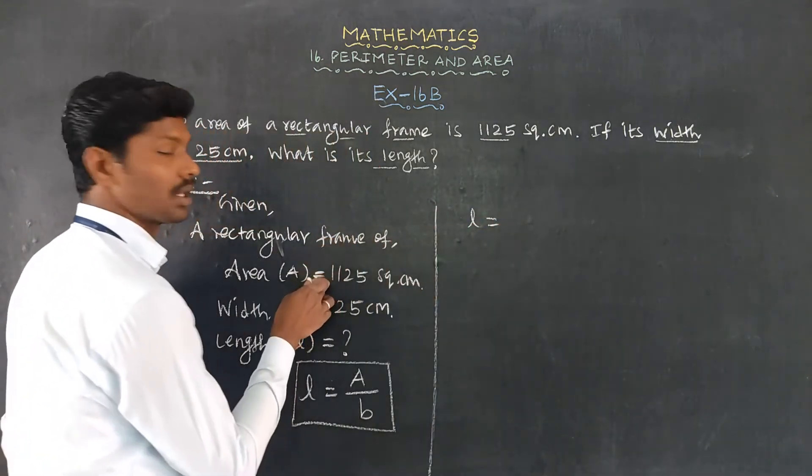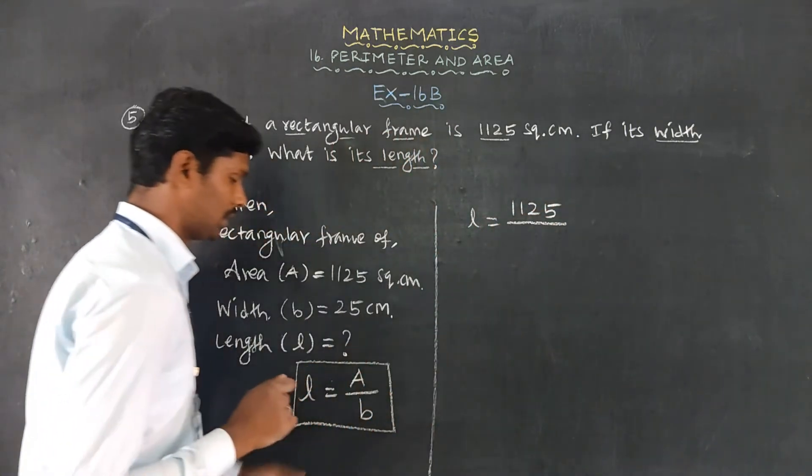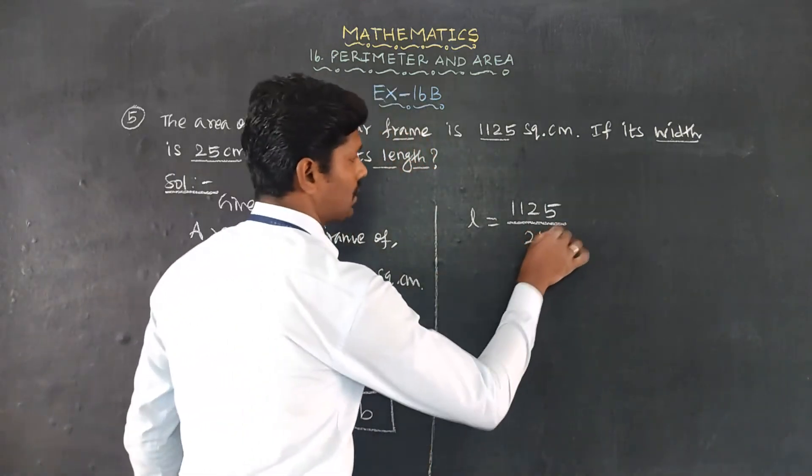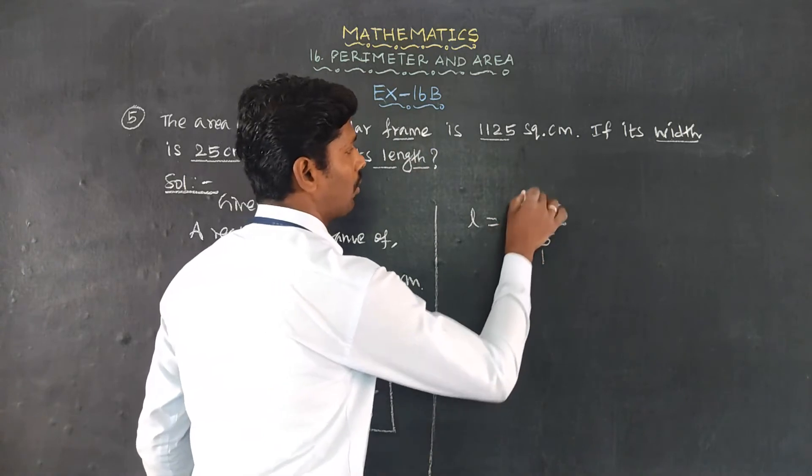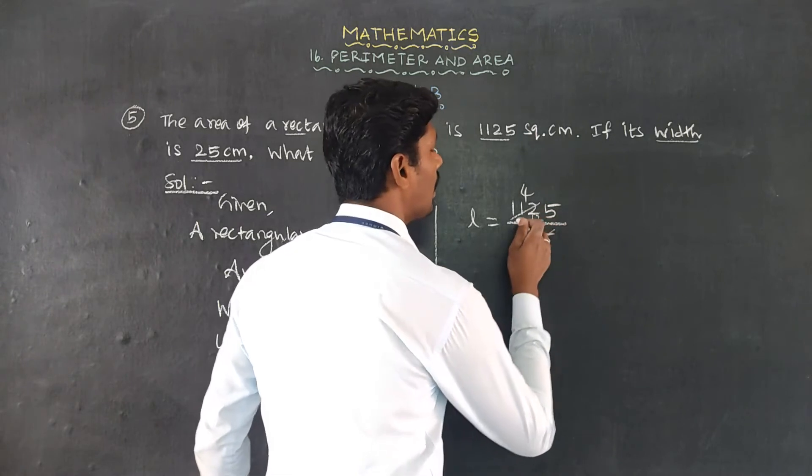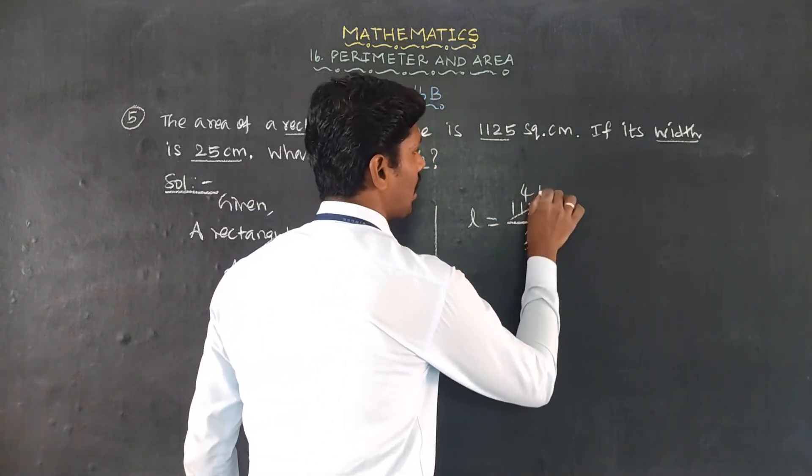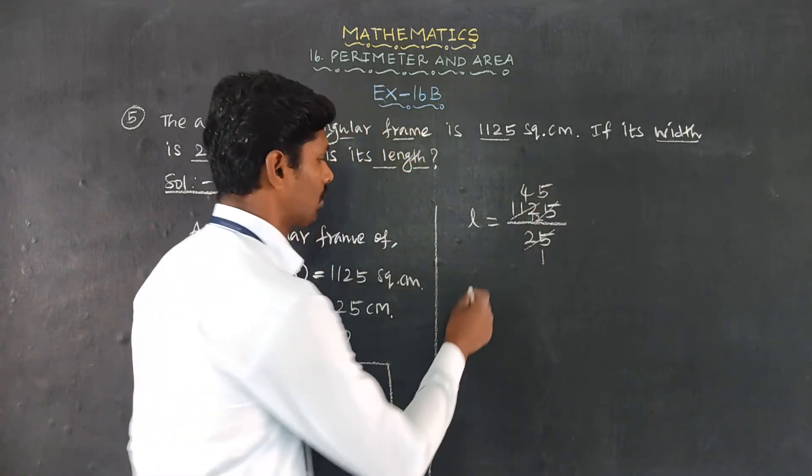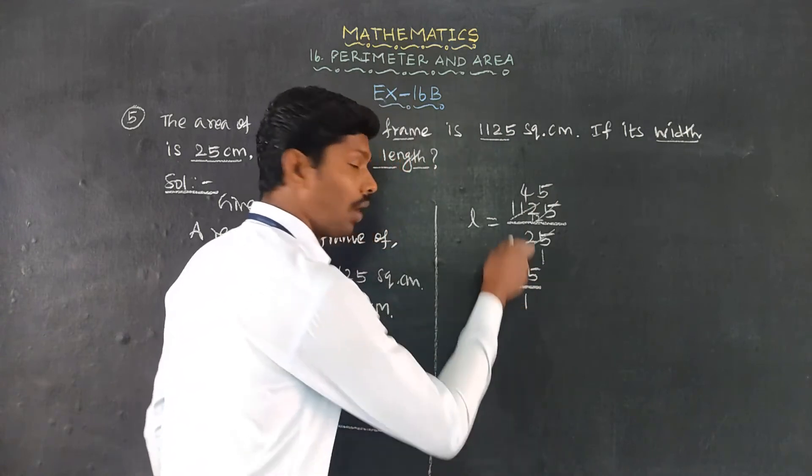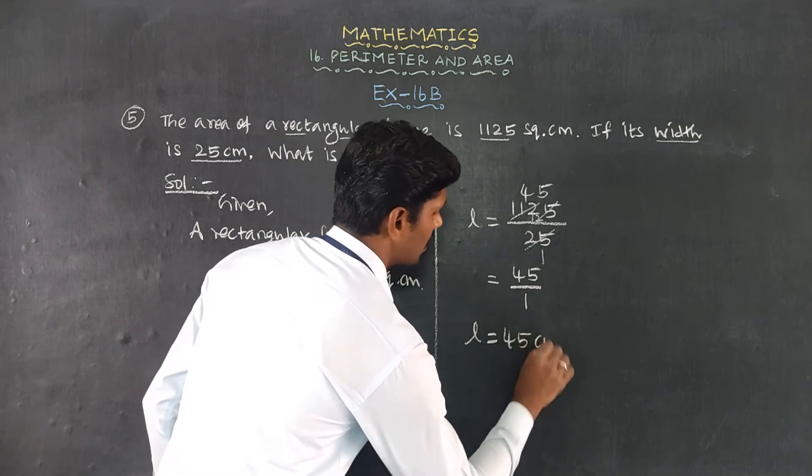This is 125. The length of rectangle, as you can see, 125 divided by 25 equals 5. Therefore, we get length equals 45 centimeter.